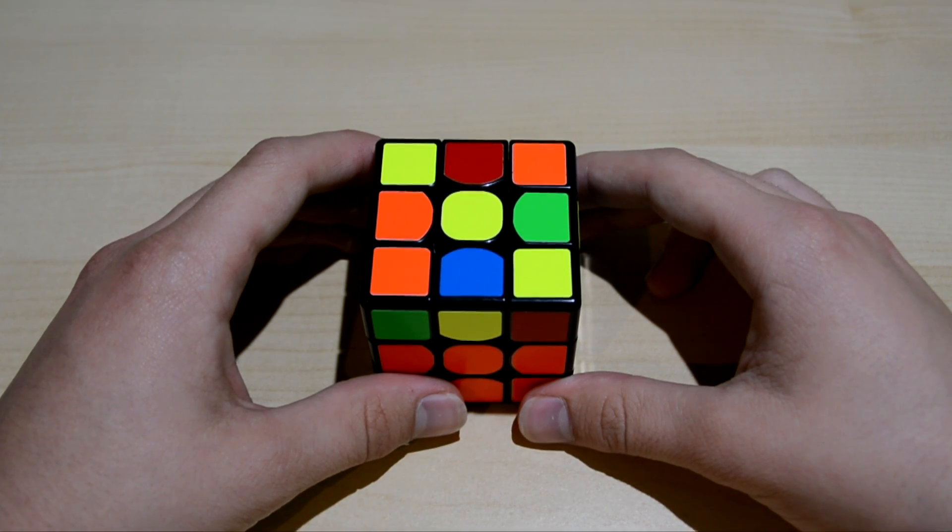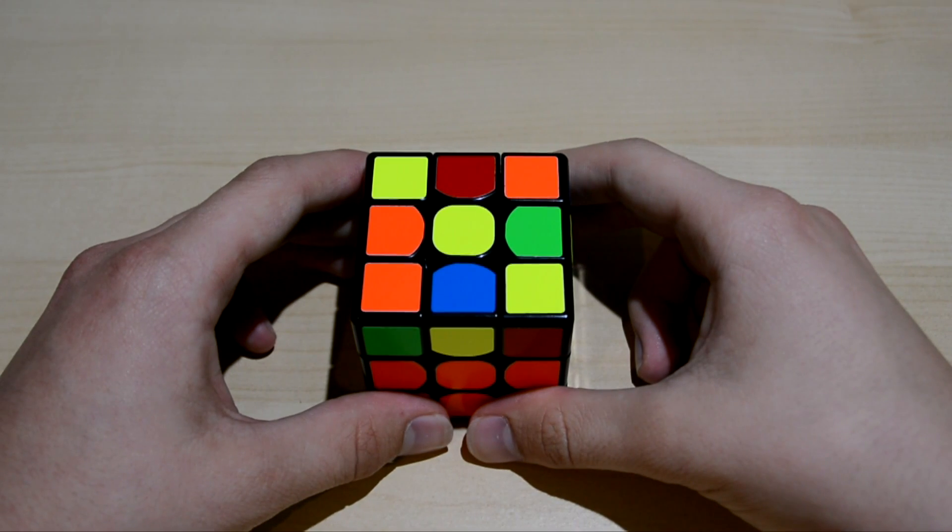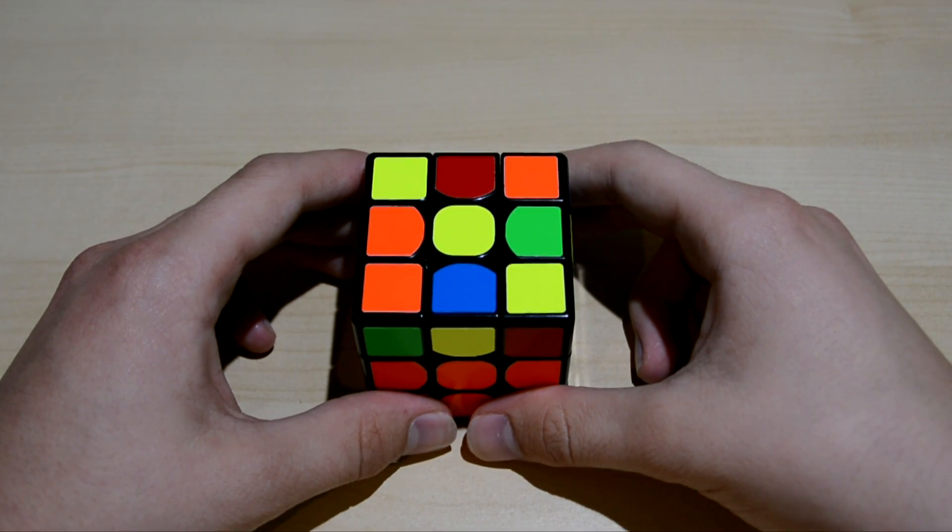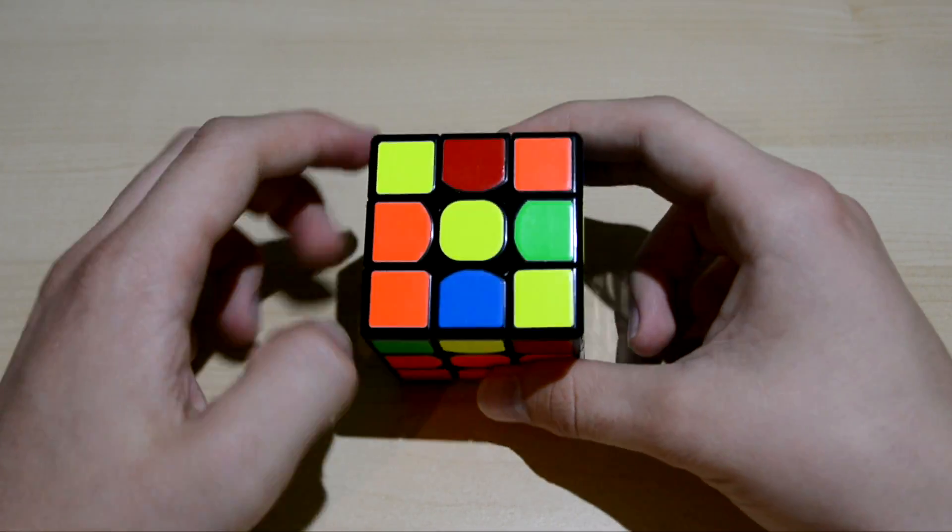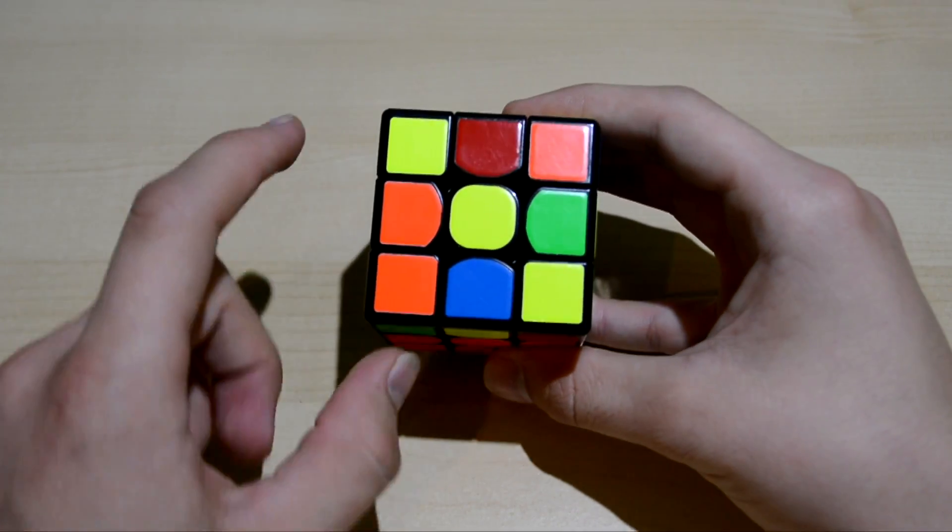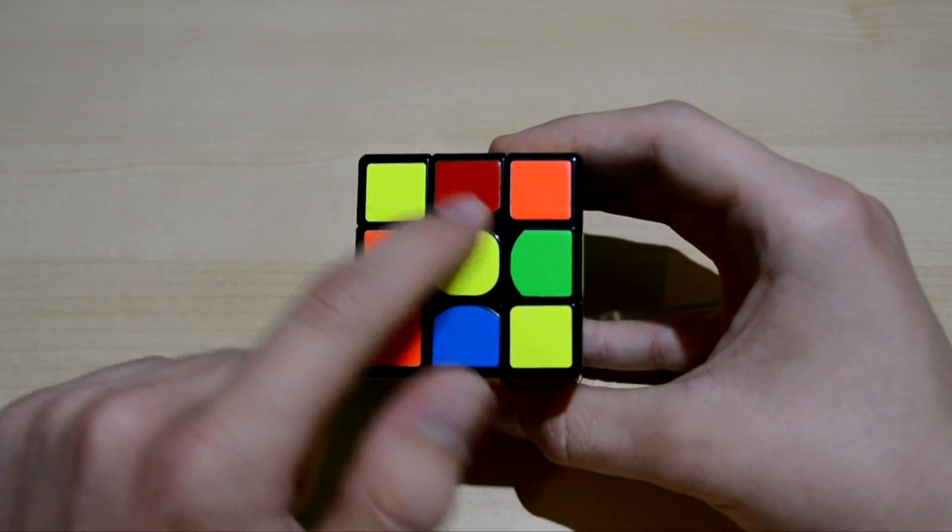What's up guys, Unicube here! Today we're gonna learn the slash algorithm. The slash algorithm is another dot case which means you have no edges flipped correctly. For the slash algorithm you have two corners solved so you have a big slash.